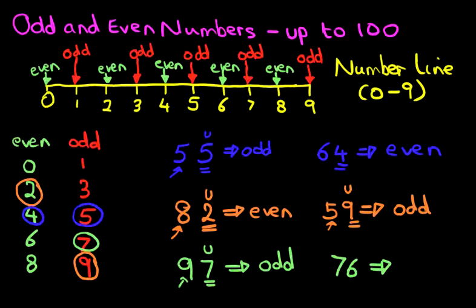I'm going to work through this. I'm going to ignore the seven. I'm going to concentrate on the six. The six is the units. Where does six appear on our chart? It's over here. Six is an even number. Therefore, 76 is an even number.